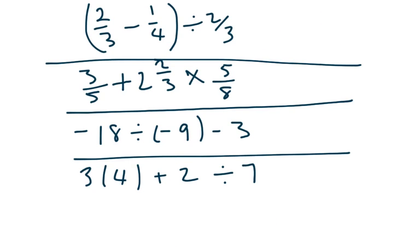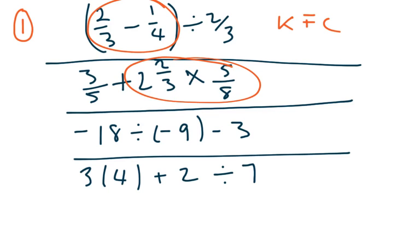Last few examples. In this example here, number 1, first of all, we would do what's inside the brackets. So, you would add up the 2 thirds, subtract a quarter. And then you would divide it by 2 thirds, and you would employ KFC here. In the second case, we're going to do this bit first, turn them into improper fractions, and then do the multiplication, because it happens before addition. So, you're going to end up then adding up 3 fifths and whatever this is first.